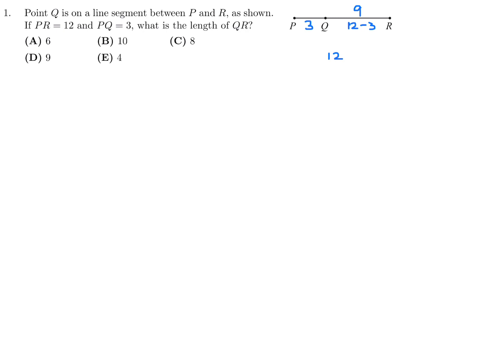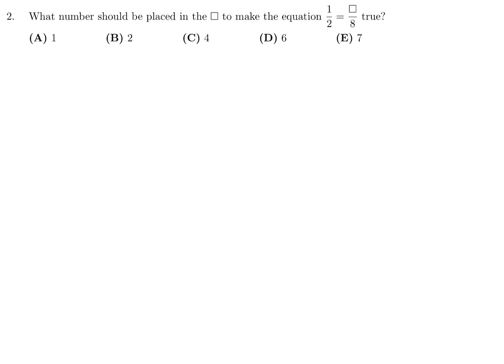What number should be placed in the box to make the equation 1 half equals box over 8 true? 1 half is equal to x over 8. If you cross multiply, 8 equals 2x, therefore x equals 8 over 2, which is 4. So a 4 goes into the box. Number 2, the answer is C.